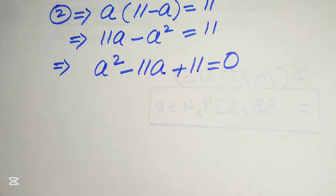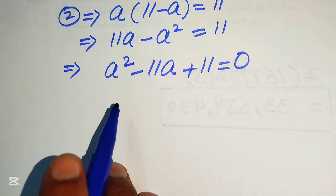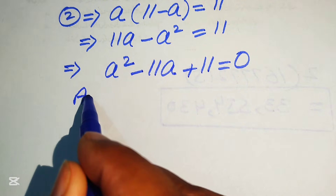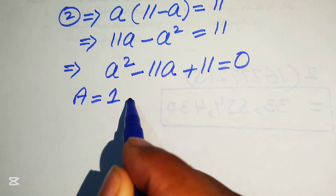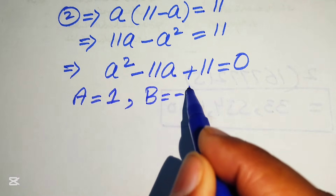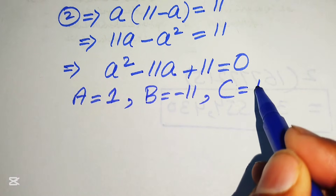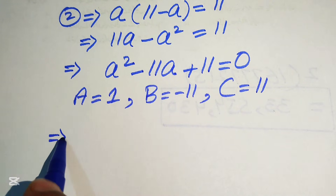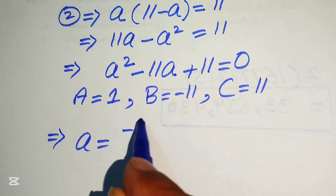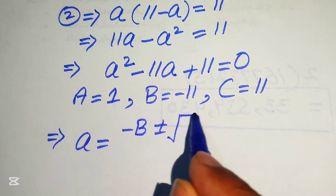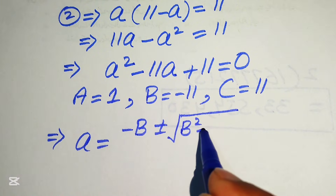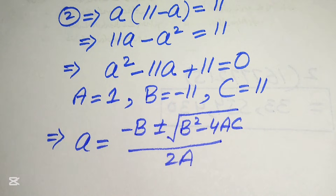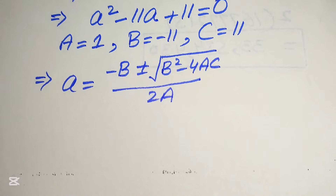So now we need to solve this quadratic equation using the quadratic formula. First we write the coefficients: capital A equals to 1, capital B equals to minus 11, and capital C equals to plus 11. We write the quadratic formula as: small a equals to minus B plus or minus square root of B squared minus 4AC, divided by 2A.